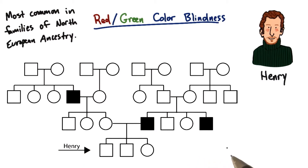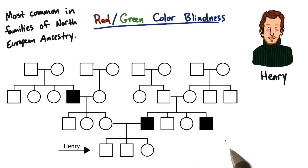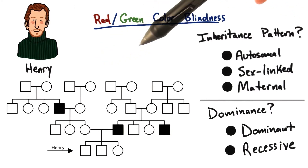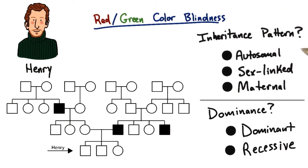Before we explore the genetic reason for this particular trait, I want you to tell me a couple of things about the inheritance pattern that you see here in the pedigree. Based on the pedigree for Henry and his family, do you think this trait of red-green colorblindness represents an inheritance pattern that's autosomal, sex-linked, or maternal? And does the trait appear to be dominant or recessive?